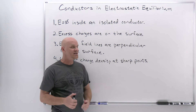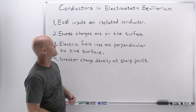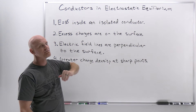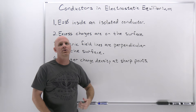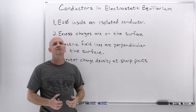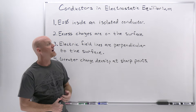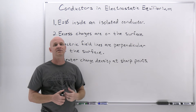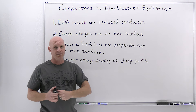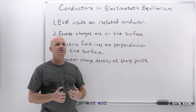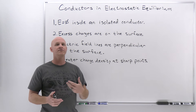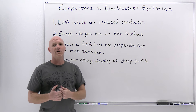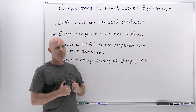We'll go back and explain each of them after we've stated them. The first rule is that the electric field is zero everywhere inside an isolated conductor. Isolated just means it's not grounded. If it had a source of electrons either to or from it because it's connected to the ground, then this rule would not apply.